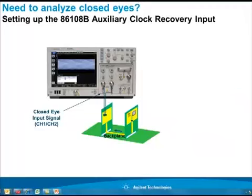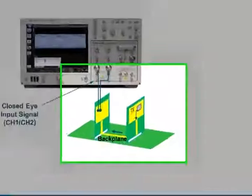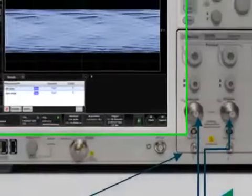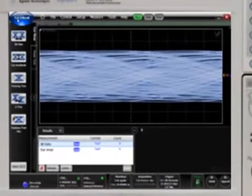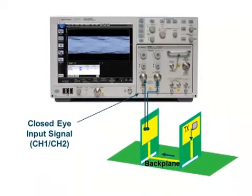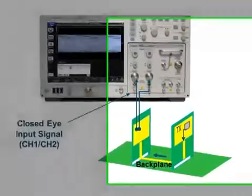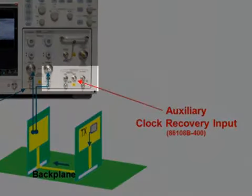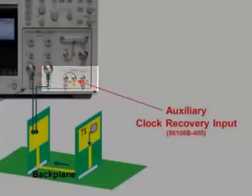There are times when a designer needs to analyze a signal after it's passed through a lossy channel, such as a backplane. In cases like this, the loss or inter-symbol interference introduced can be so excessive that it actually closes the eye diagram. In such cases, the hardware clock recovery may not be able to recover a clock, and therefore there wouldn't be any trigger for the oscilloscope. The 86108B module includes an auxiliary clock recovery input that helps address this issue.